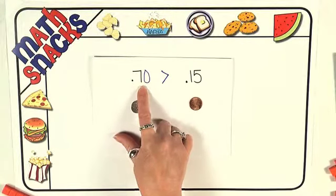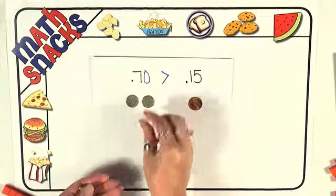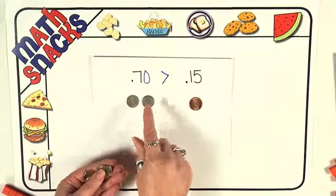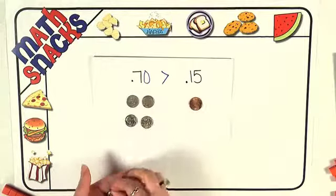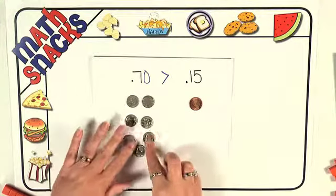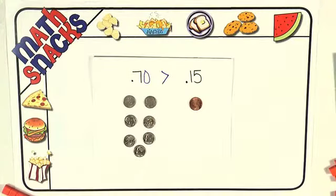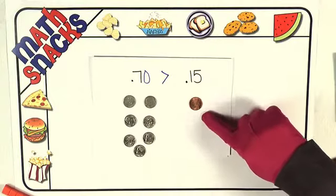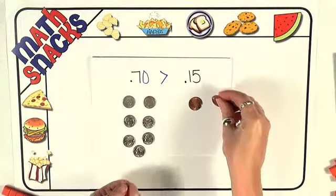Could be seventy pennies, but you want me to do seven tenths. I want you to do seven tenths. Ten, twenty... one, two, three, four, five, six, there's seven tenths. Seven dimes. And now we need the fifteen hundredths which is how many pennies? Fifteen pennies.